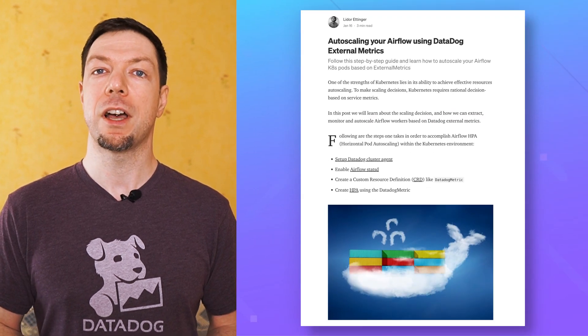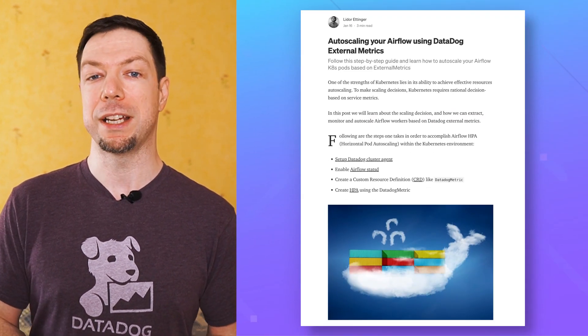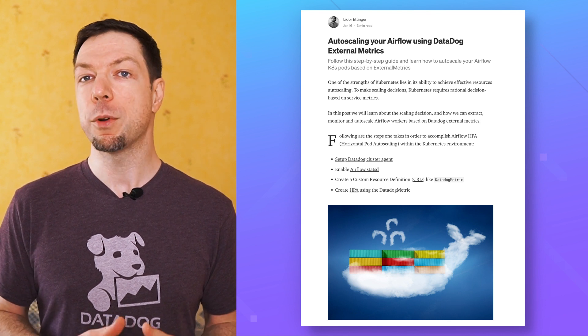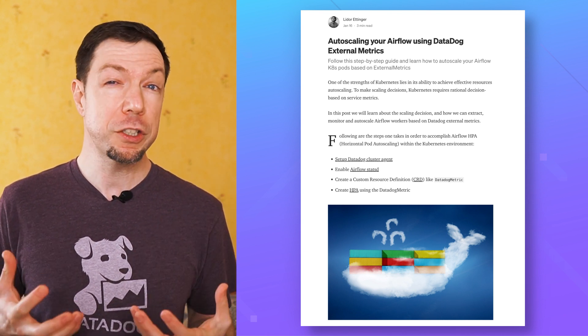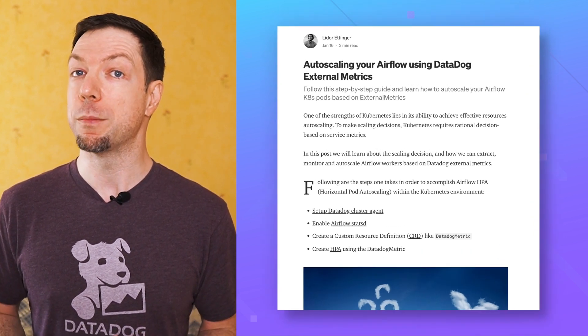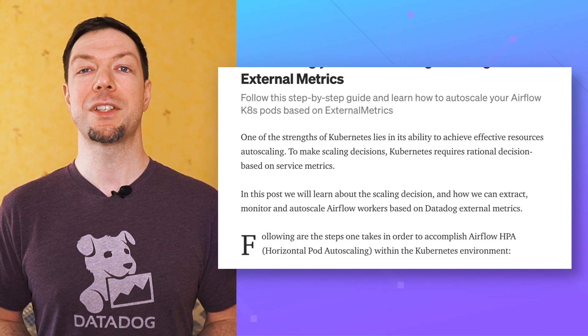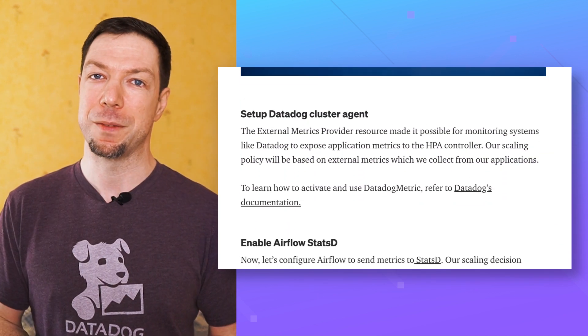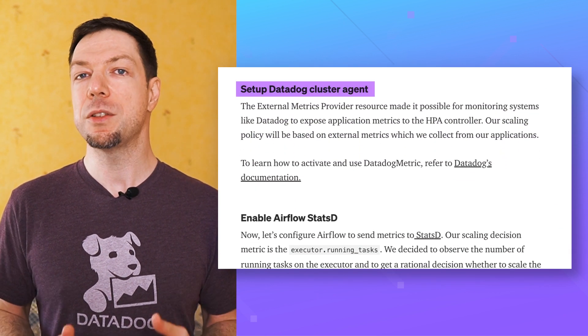Hi, I'm Dan, an engineer on the community team here at Datadog. This month, we wanted to highlight an excellent blog post from Lidor Ettinger on the subject of auto-scaling your Kubernetes clusters. As Lidor points out, scaling the number of active nodes as a function of pod count is an excellent way to achieve cost savings on variable workloads — something of interest to pretty much anybody running Kubernetes at even moderate scales. Apache Airflow is used as the material example in this case.